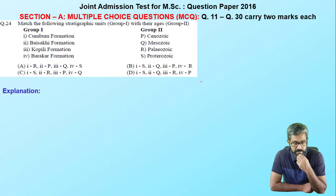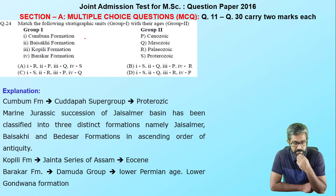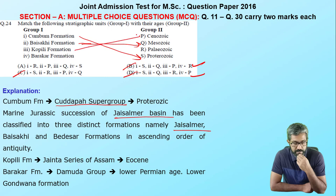Moving to the next question — match the following stratigraphic units. Kambam Formation belongs to the Cuddapah Supergroup, which is Proterozoic, so option I = S. Baisakhi Formation in the Jaisalmer Basin belongs to Marine Jurassic, so II = Q (Mesozoic). Kopili Formation belongs to the Jaintia Series of Assam — it is Eocene (Paleogene), so III = P. Baraka Formation belongs to Gondwana (Permian/Paleozoic). My answer is B.